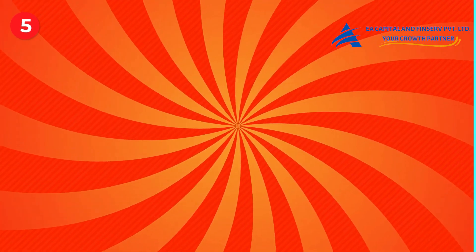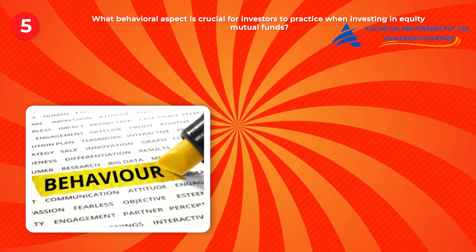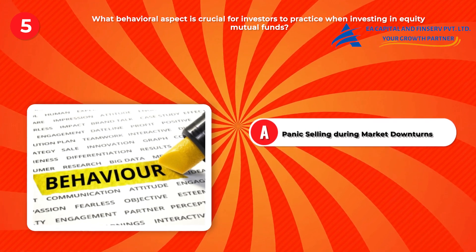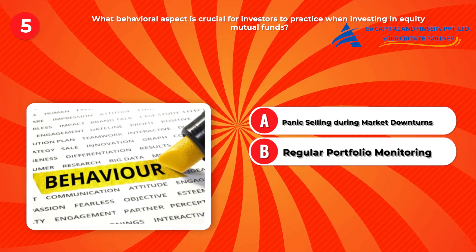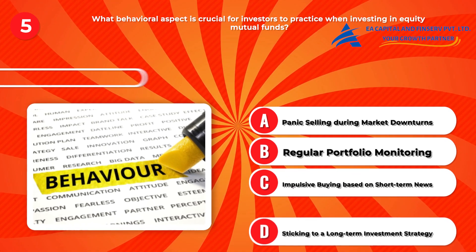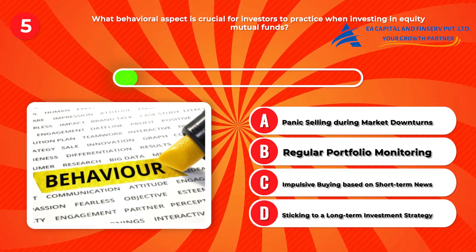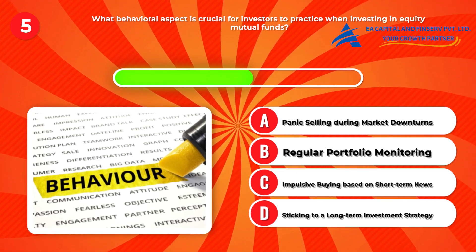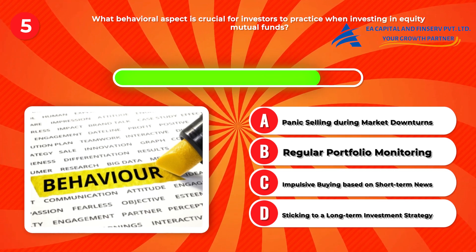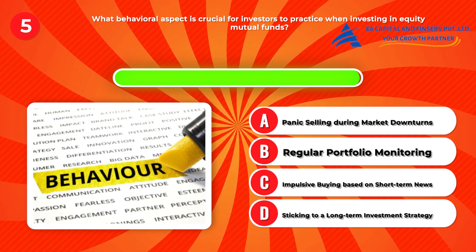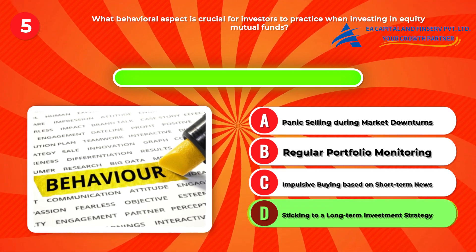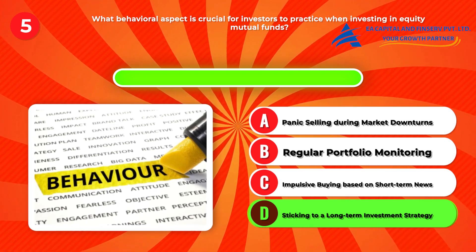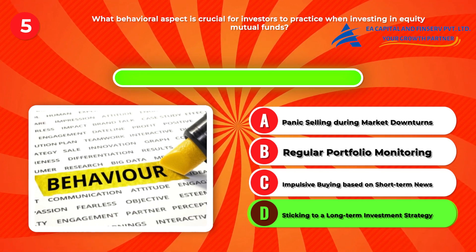Question five: What behavioral aspect is crucial for investors to practice when investing in equity mutual funds? A, panic selling during market downturns. B, regular portfolio monitoring. C, impulse buying based on short-term news. D, sticking to a long-term investment strategy. Answer: D, sticking to a long-term investment strategy. Avoiding knee-jerk reactions to market fluctuations and staying committed to your investment plan can lead to better outcomes over time. Patience and discipline are key virtues in the world of investing.